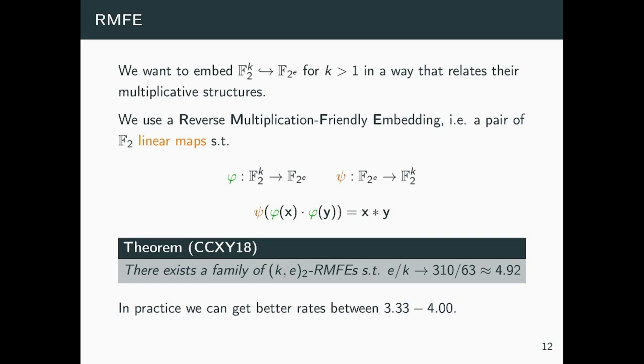For this reason, we turn our attention to another tool, the Reverse Multiplication-Friendly Embedding. This tool was previously known in multi-party computation and was used for batch computation of Boolean circuits. Essentially, it consists of two maps that can embed k bits into a larger field of degree e. We have the map φ that performs the embedding and takes k bits, returning a field element, and the map ψ, the orange one, that given a field element, essentially returns back the bits we started with.